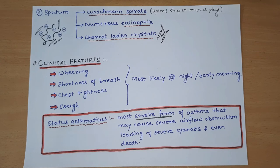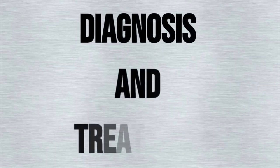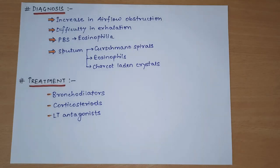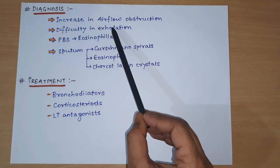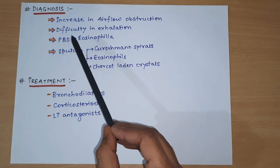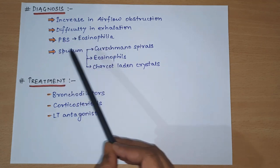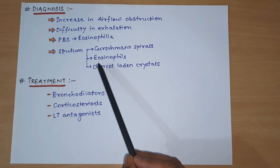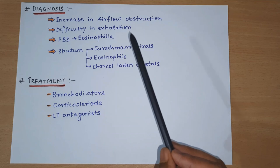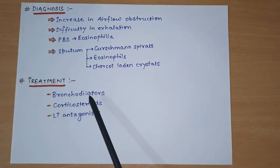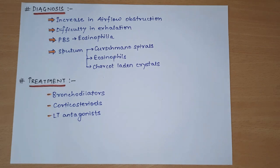Coming to the diagnosis and treatment of Bronchial Asthma. A person with increased airflow obstruction and difficulty in exhalation, with peripheral blood smear showing eosinophilia, and sputum containing Curschmann spirals, eosinophils, and Charcot-Leyden crystals, can be diagnosed as a suspected case of Bronchial Asthma. Treatment includes bronchodilators, corticosteroids, and leukotriene antagonists.